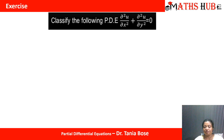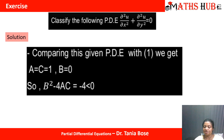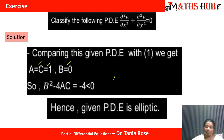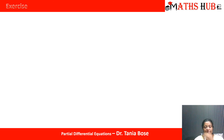The next question: classify the PDE ∂²u/∂x² + ∂²u/∂y² = 0. Comparing with the standard equation gives a = 1, b = 0, and c = 1. Computing b² − 4ac gives 0 − 4(1)(1) = −4, which is less than 0, so this PDE is elliptic in nature.